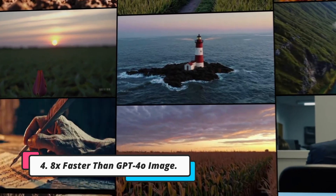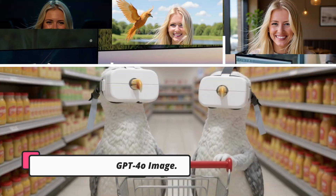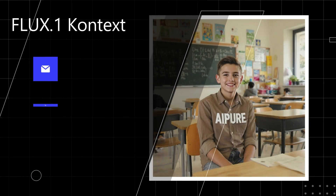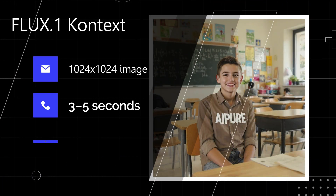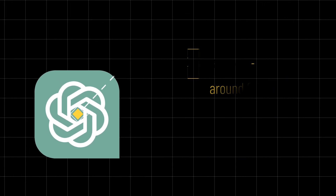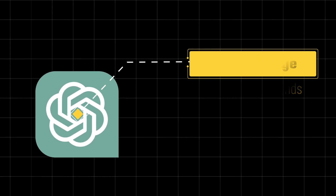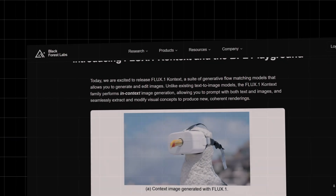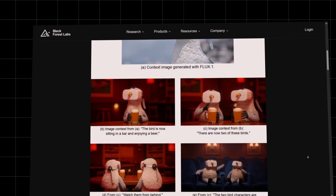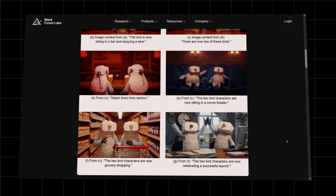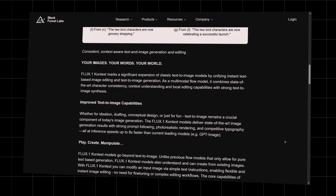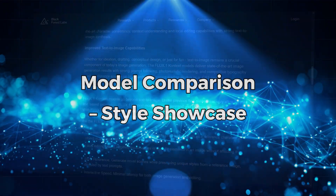Fourth: Eight times faster than GPT-4O image. We ran a speed test — Flux.1 Context generated a 1024 by 1024 image in just 3 to 5 seconds, while GPT-4O image took around 25 seconds. Why is it so fast? It uses a cutting-edge technique called latent adversarial diffusion distillation, which cuts down sampling steps dramatically, making Flux.1 one of the fastest image generators on the market right now.